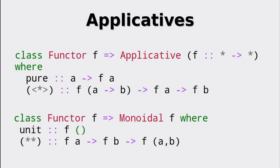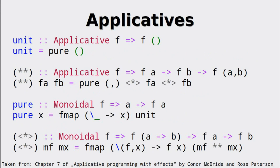My claim is that applicative functors and monoidal functors are equivalent. So let's show that we can create the functions for either type class from the other. Indeed, it is possible. Unit is defined by using pure on the empty tuple and the double star is created by using the applicative operator in conjunction with the function building a tuple wrapped into the functorial context. Pure can be built from unit by using the fact that monoidal functors still have an fmap. So we use unit to create a structure containing only the empty tuple and then replace it with a given value by applying fmap.